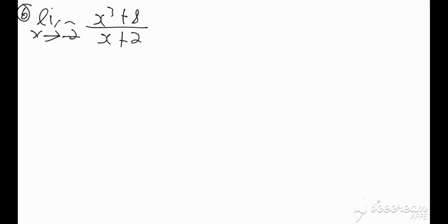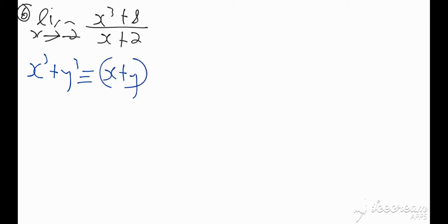When I examine the numerator here, I have x cubed plus 8, which means I actually have the sum of two cubes, because 8 can be written as 2 cubed. So let us recall what the sum of two cubes looks like. We have x cubed plus y cubed, which is equivalent to (x plus y) times (x squared minus xy plus y squared). We have to know this before we can attempt to evaluate this question.